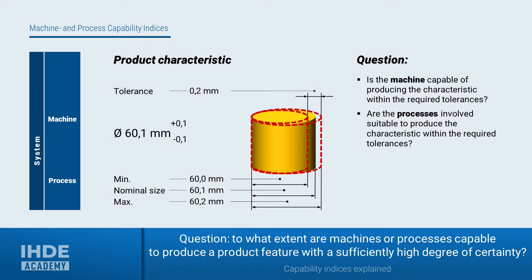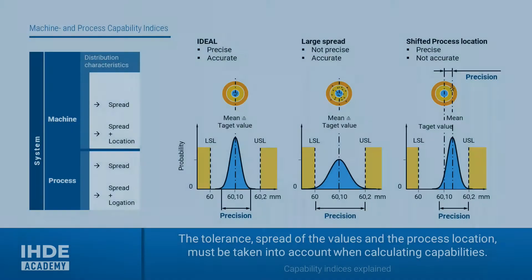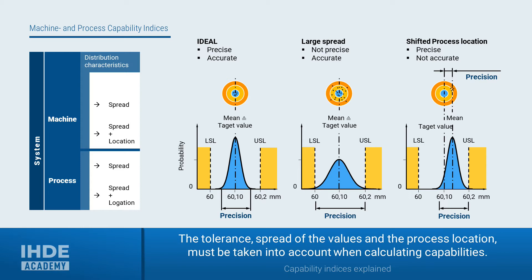Let's start with the essential terms and contexts for calculating the capability indices. The starting point is again the diameter of a piston. The question that now arises is whether the machine or the process involved are capable of producing this characteristic within the required tolerance and with a sufficiently high degree of reliability. Based on a previous lesson covering accuracy and precision, we look at what spread and process location are — both process properties that play an important role in the calculation of process capability indices. Since these basics are very important, they should be briefly repeated here.